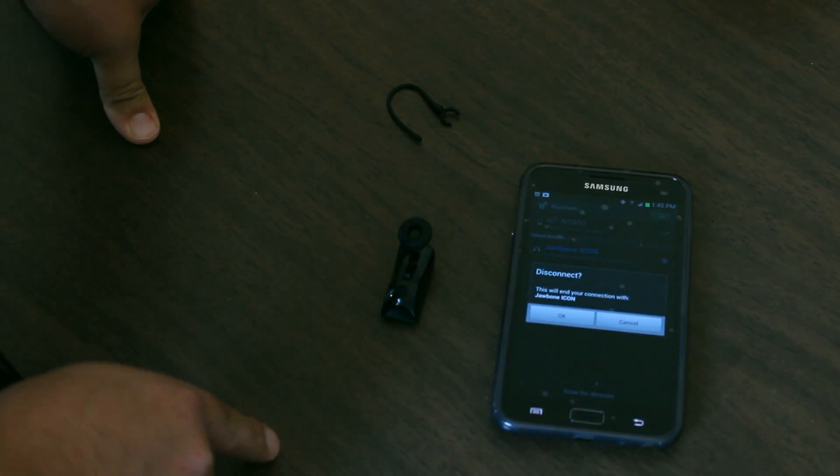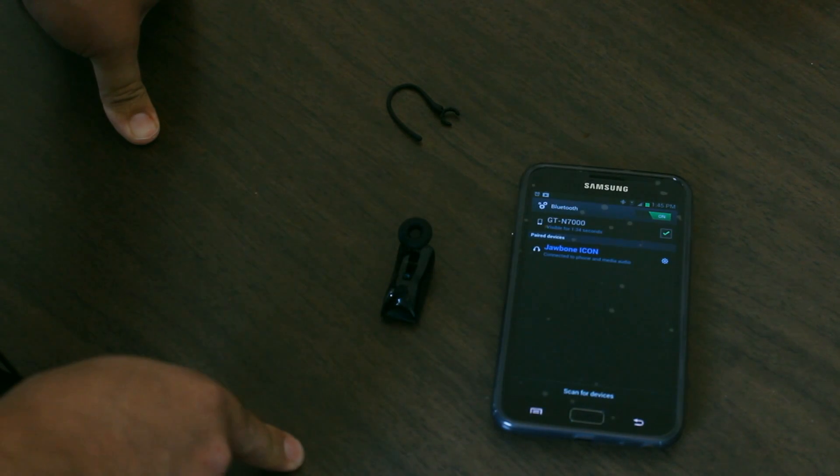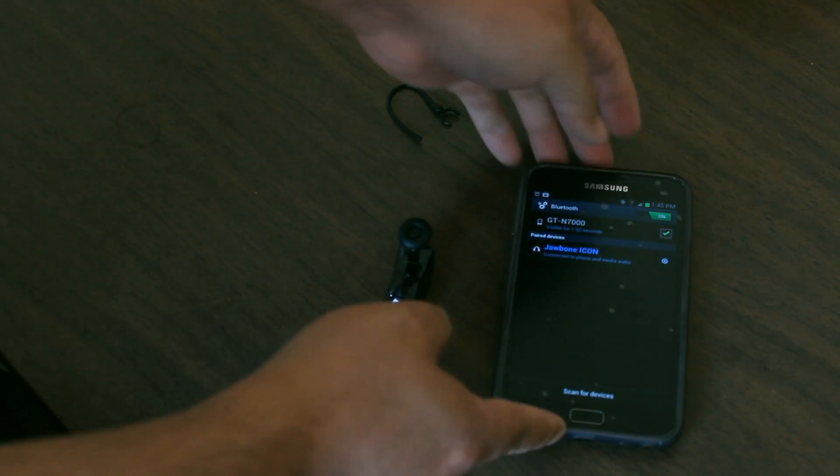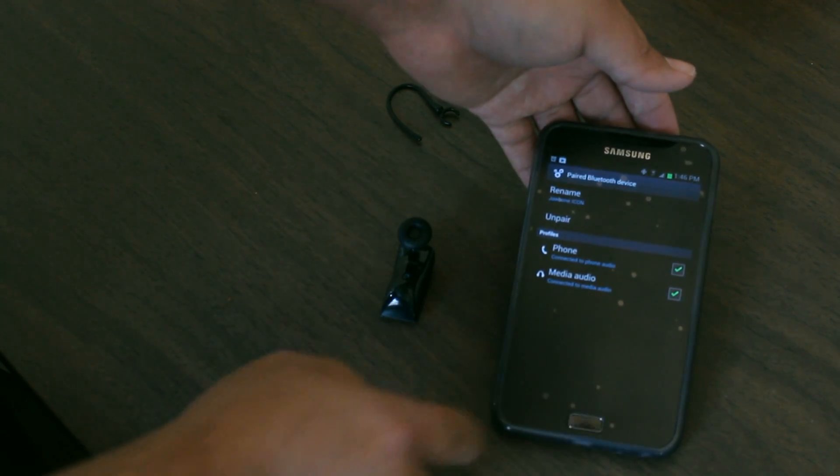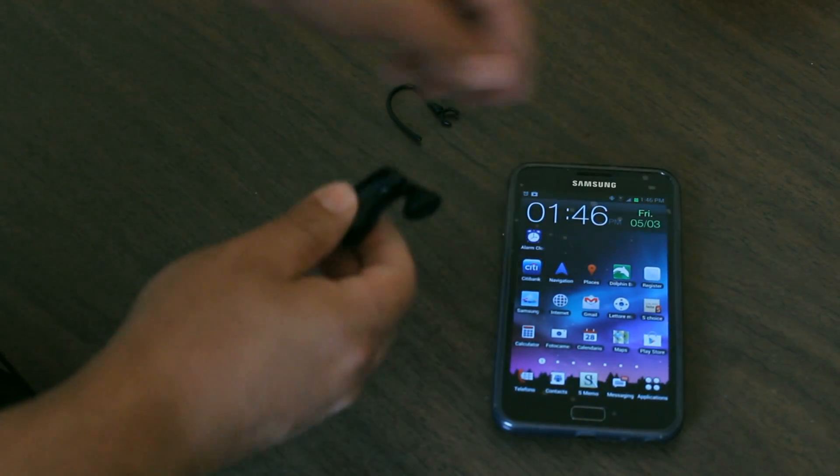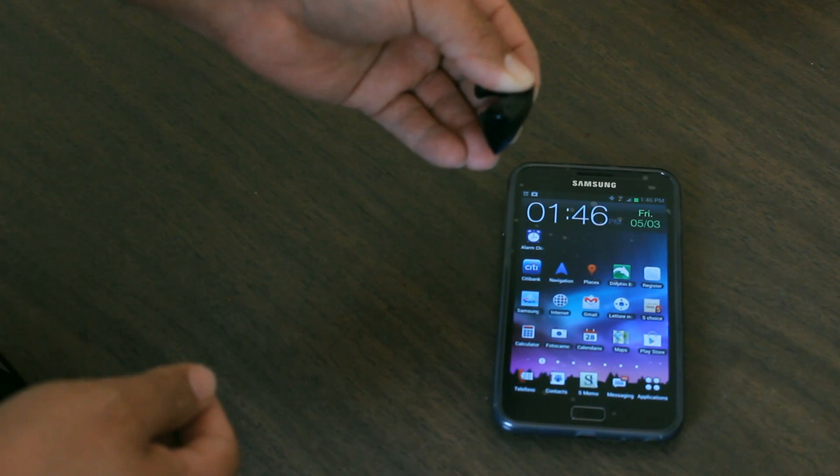If we press the Bluetooth headset again it will disconnect - we don't want to do that. There's a gear next to it for settings. If we press those settings it will show us the phone and media audio we can activate and deactivate. Some headsets support music through the headset, videos, and all that.